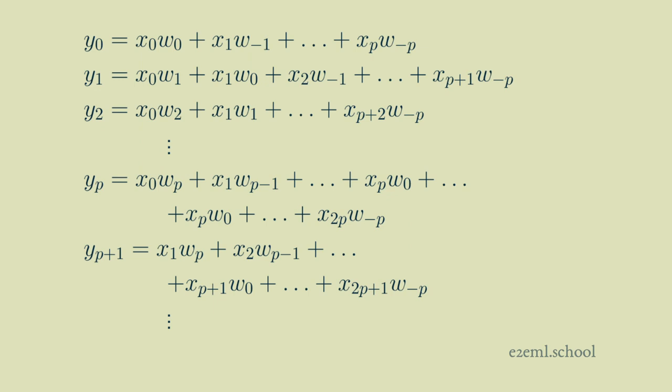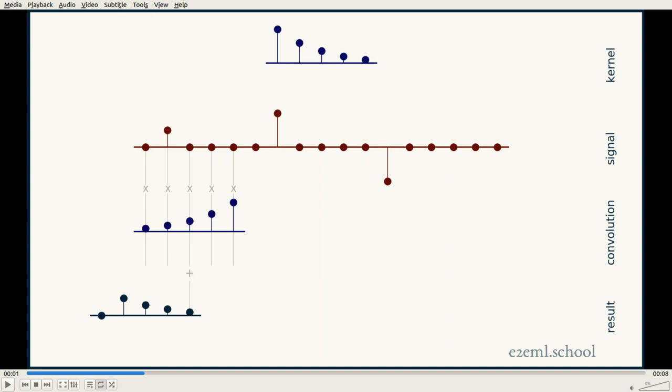And then we just step, counting up on our x's and down on our w's, because our w has been reversed, our kernel has been reversed. So we have x sub one times w of p minus one. And we keep going until we get to the center of our kernel, which is x sub p times w sub zero.